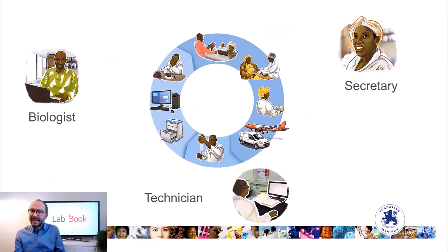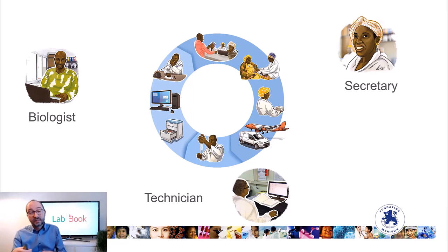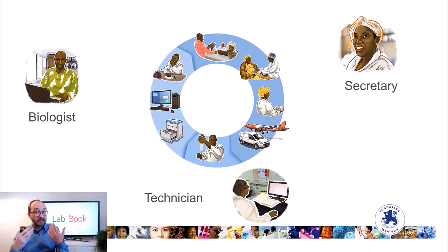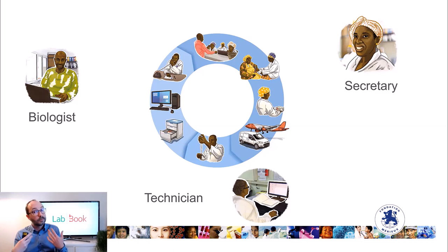How is a LIS working? There is a dedicated lab activity process that will go from the secretary, who will enter all the patient information and all the requests for analysis. Then it will move to the technician account that will put all the lab results into the software. Then we move to the biologist account where we will do the biological validation and then edit the lab report.